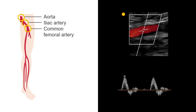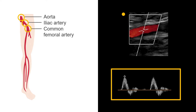Similar to ABIs, multiphasic waveforms are normal. If there is a blockage in the leg, triphasic waveforms can usually be obtained only proximal to a significant stenosis. Here, there are triphasic waveforms at the CFA, which also indicates normal aortoiliac inflow because the CFA is distal to it. Arteries distal to a significant stenosis will not be triphasic.